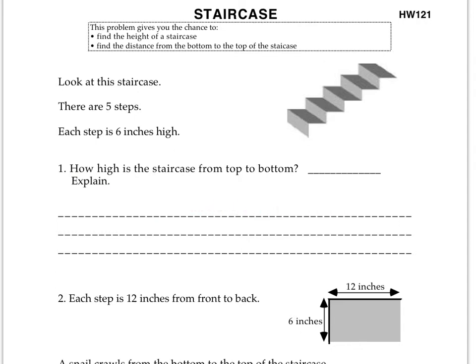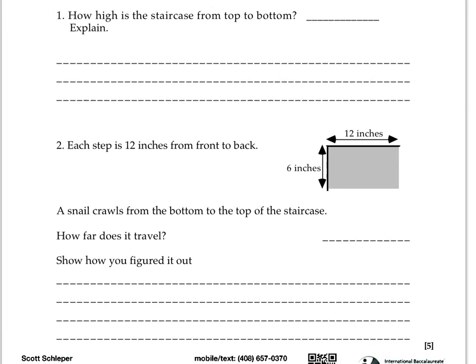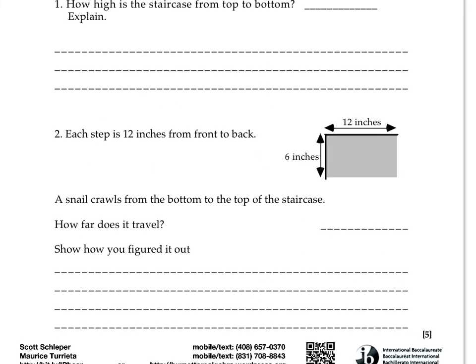Or you can show it using math. Number two says each step is 12 inches from front to back, so the top part of each step is 12 inches. It says a snail crawls from the bottom of the top staircase. So a snail crawls from the very bottom, goes up six inches.